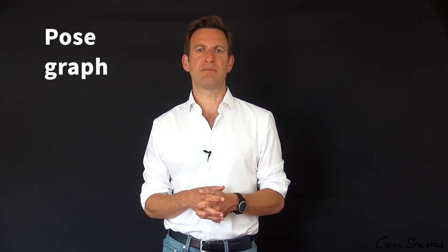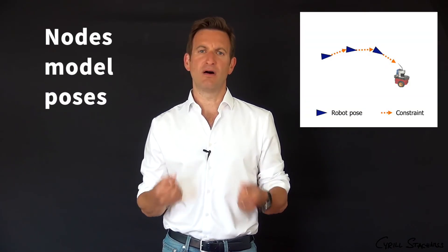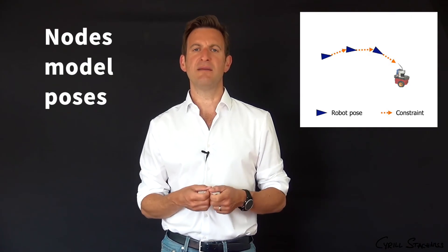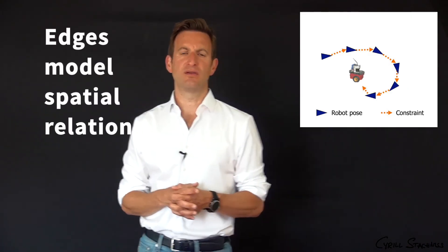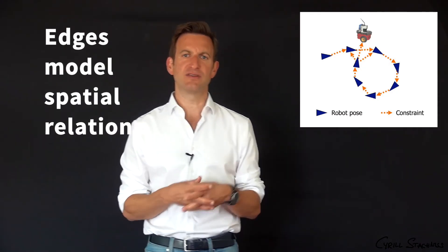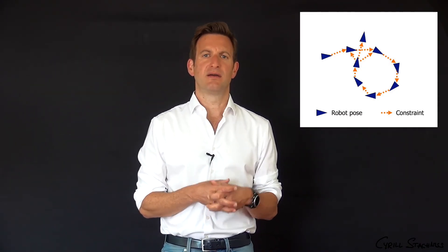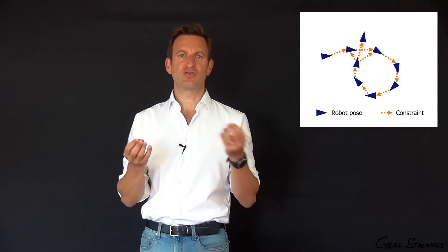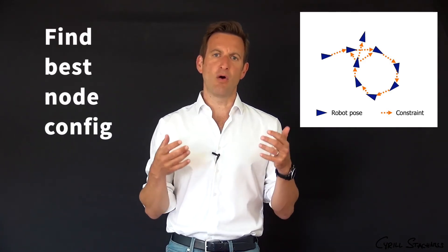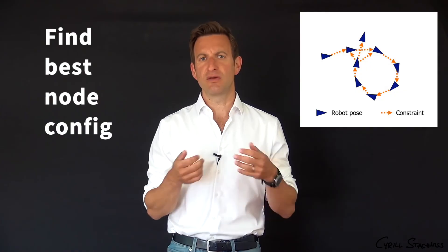In pose graphs, every node represents the pose of the sensor at a certain point in time, and the edges between those nodes represent the spatial relations extracted from the sensor data. The optimization system then tries to find a new configuration of the nodes so that the overall error introduced through the edges gets minimized, until it finds the minimum error configuration — which is the least squares solution. This technique is used whenever you need to build a map and localize yourself within it.